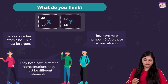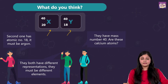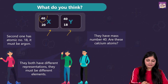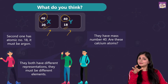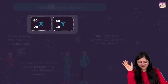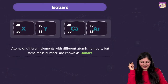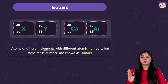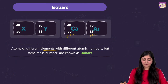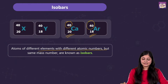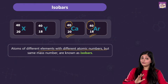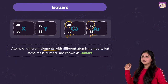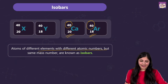Now look at atoms X and Y — something is common between them and their mass number is the same, but the atomic number is different, which means they are atoms of different elements. Fida answered first: isobars! Atoms of different elements with different atomic numbers but the same mass number are known as isobars. Calcium and argon are an example of a pair of isobars.